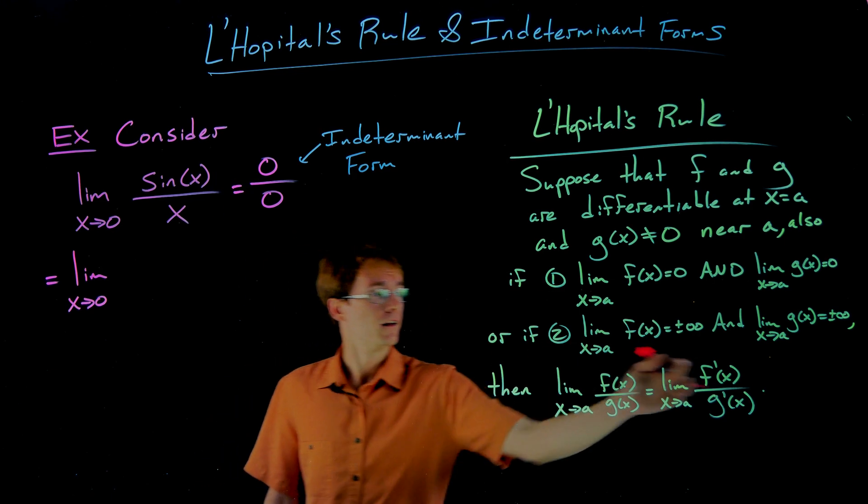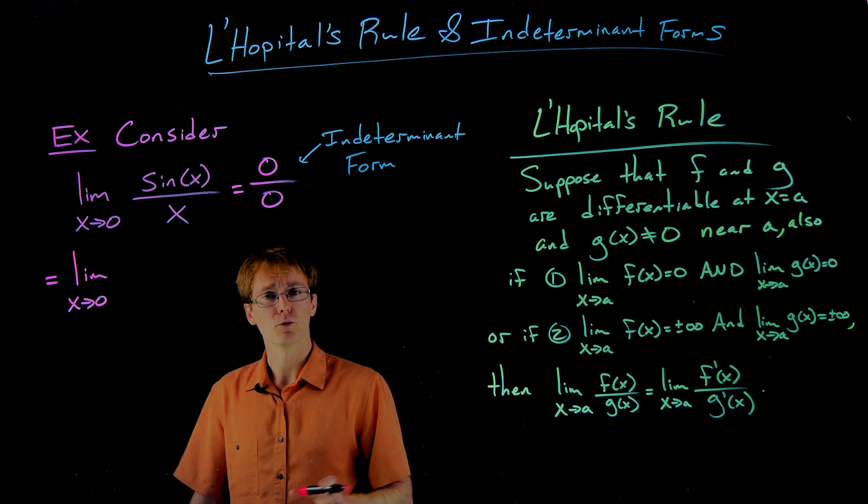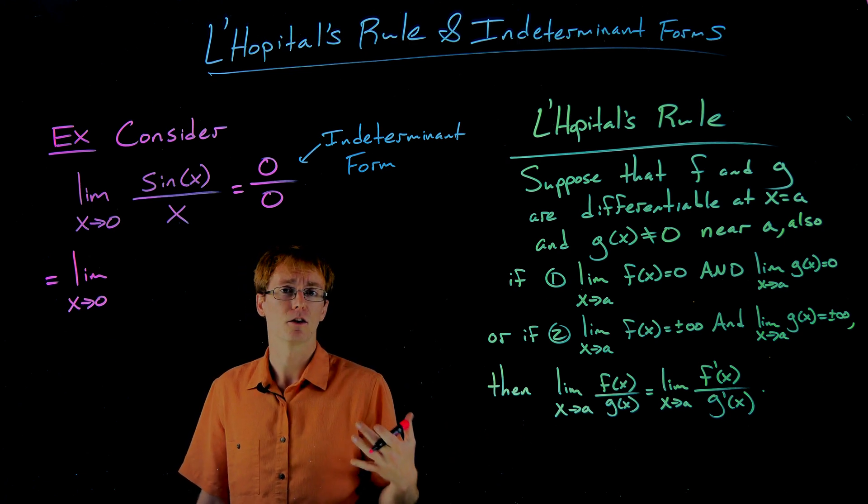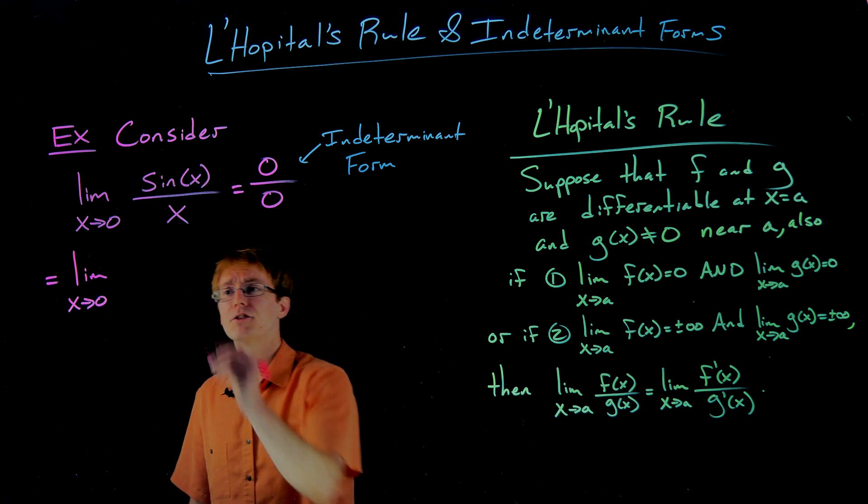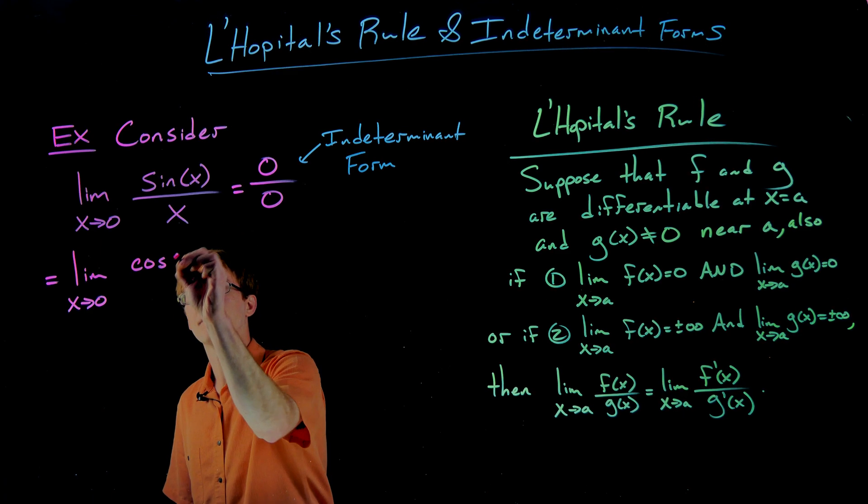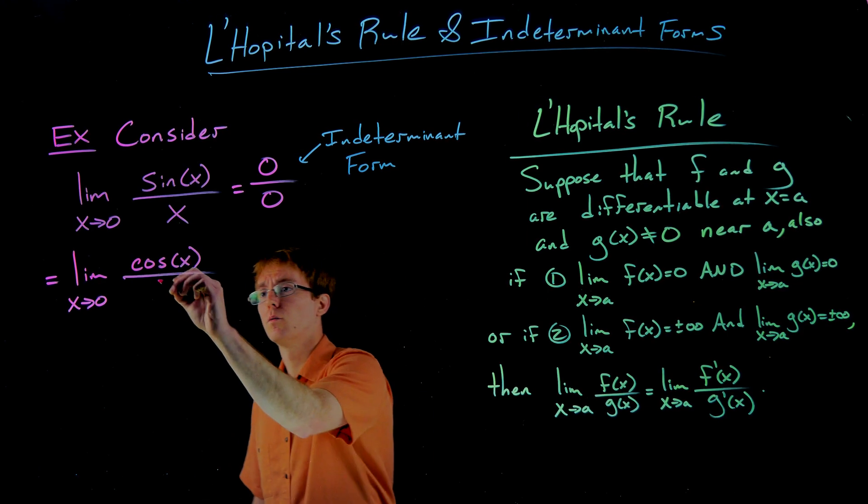So we have to look at the derivative of the numerator over the derivative of the denominator. We don't have to use the quotient rule or anything like that here. That's what makes L'Hopital's rule very nice and easy to work with. We just have to take the derivative of sine, which is cosine of x, and divide that by the derivative of x, which is one.